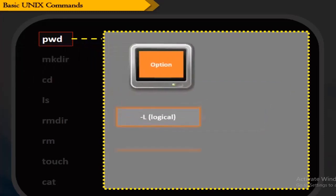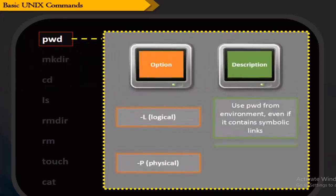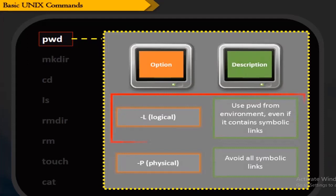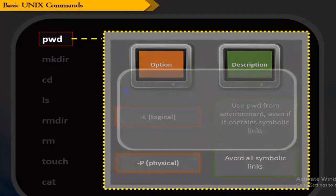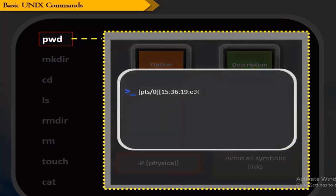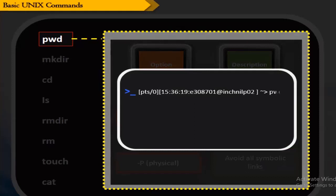The following are the options and their corresponding descriptions. The -L (logical) option uses pwd from the environment even if it contains symbolic links. The -P (physical) option avoids all symbolic links. pwd can also be used without any options.